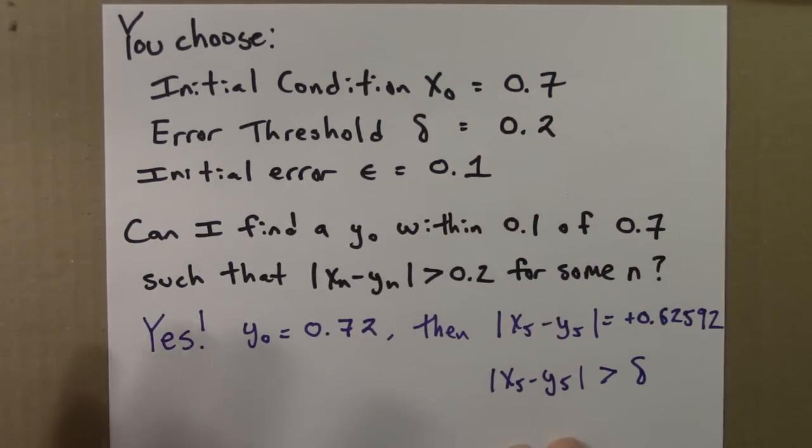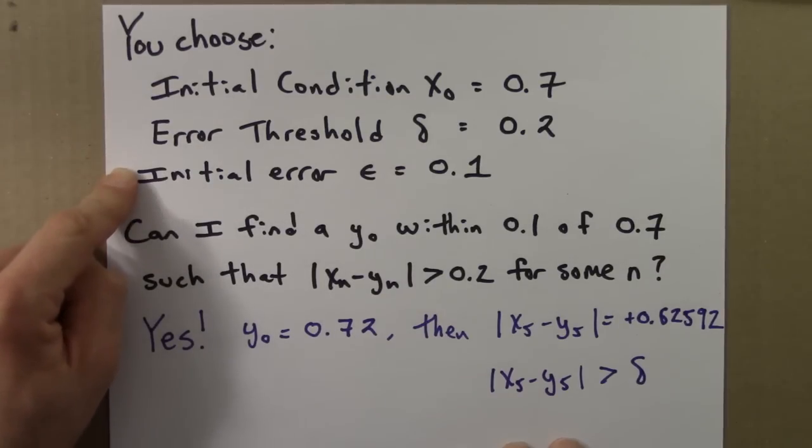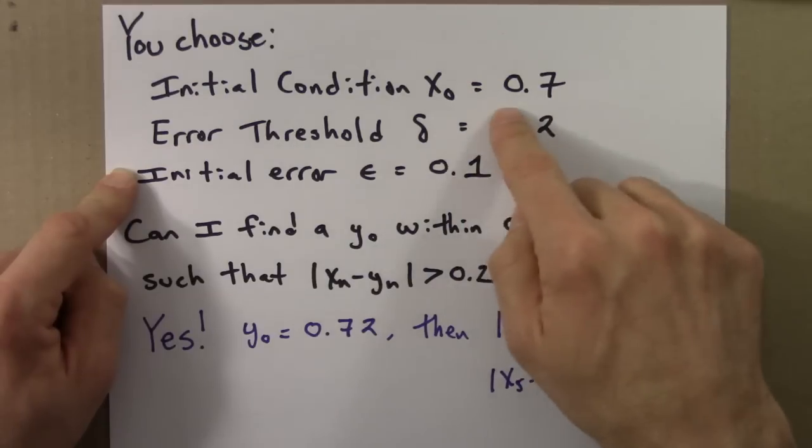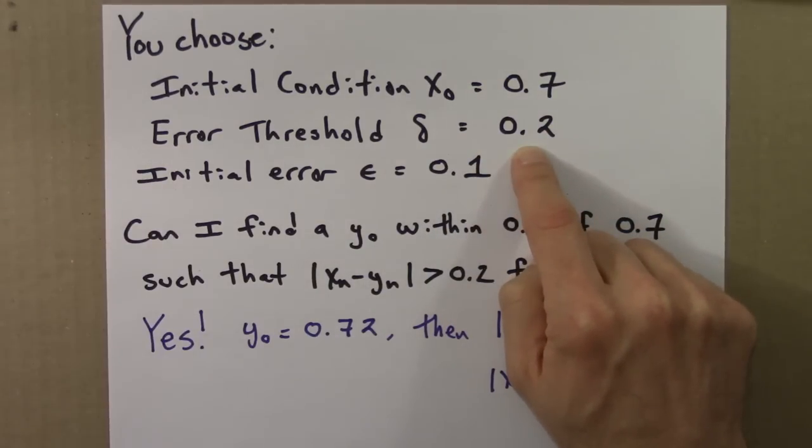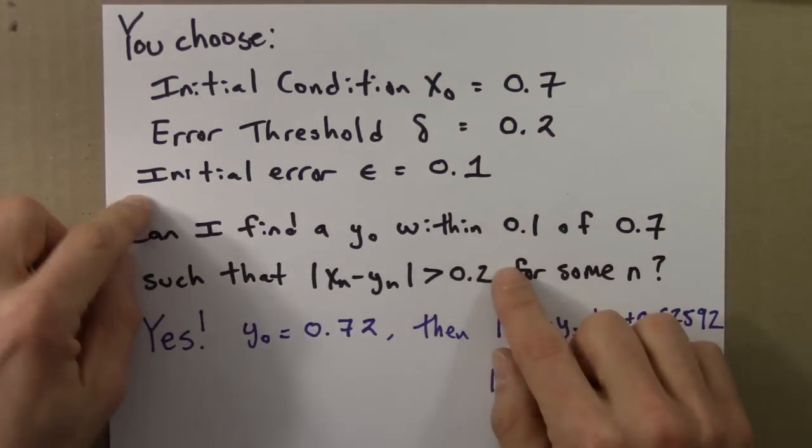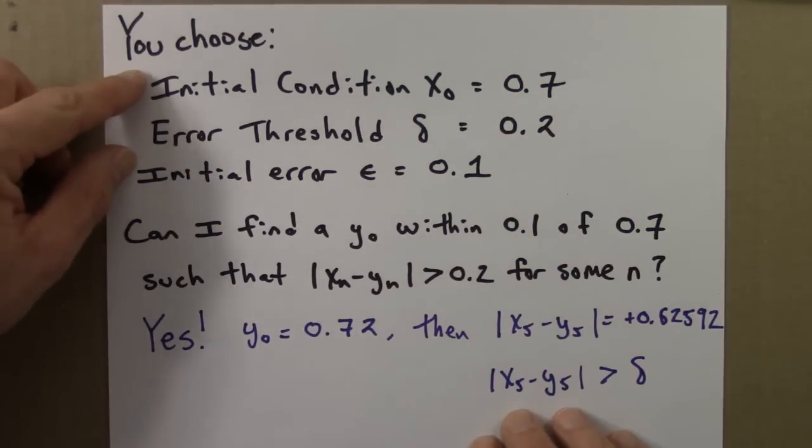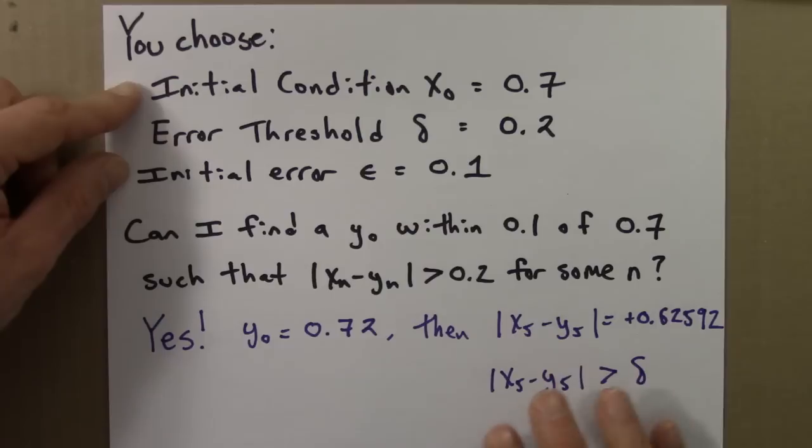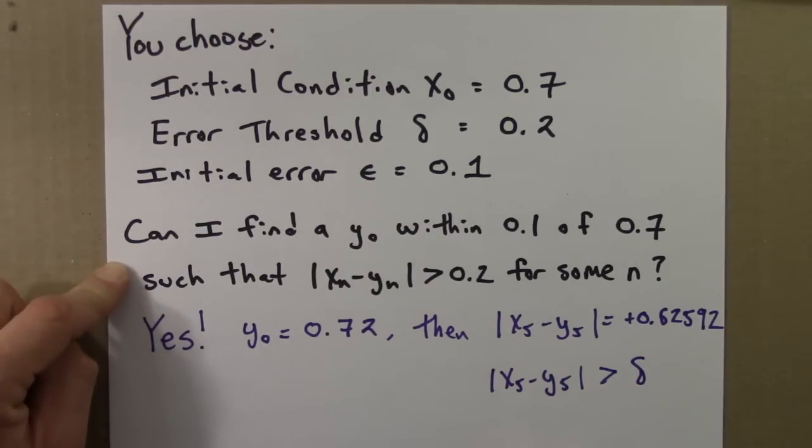If a function has sensitive dependence on initial conditions, I have to be able to answer this question with yes for whatever you choose for these three things. Again, as long as you don't do something crazy, like choose a delta greater than 1. If we're talking about the logistic equation, everything has to be between 0 and 1. As long as you choose reasonable, or not crazy numbers here, for any reasonable choice of these three numbers, I can always answer this question yes.